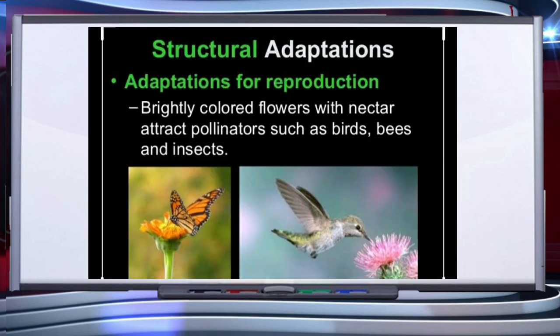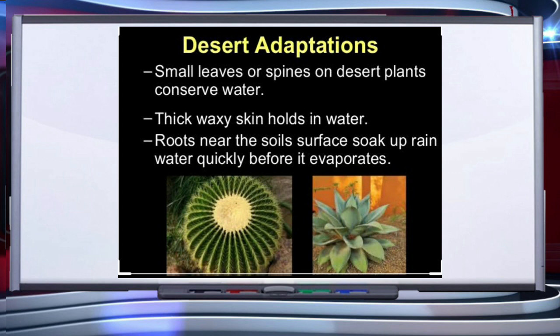Another example is pollination: flowers have bright colored petals to attract pollinators like birds, bees, and insects for pollination. Desert plants have small leaves, or leaves modified into spines, to reduce transpiration through stomata. They have thick waxy skin which holds water or reduces transpiration. Roots are near the soil surface to soak up rainwater quickly before it evaporates.